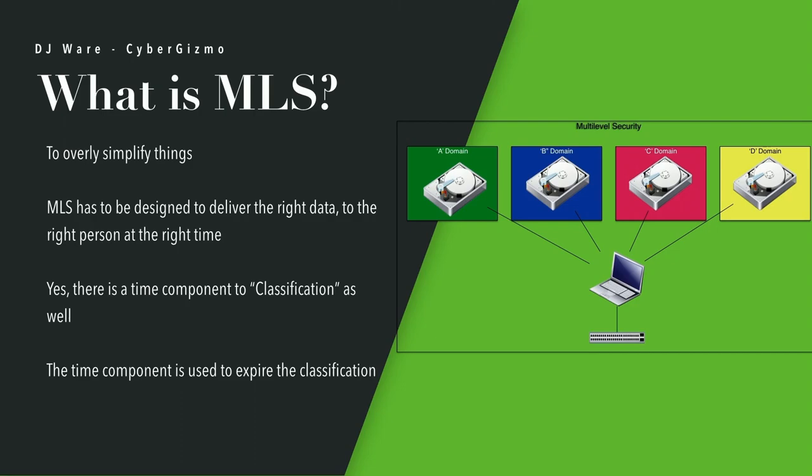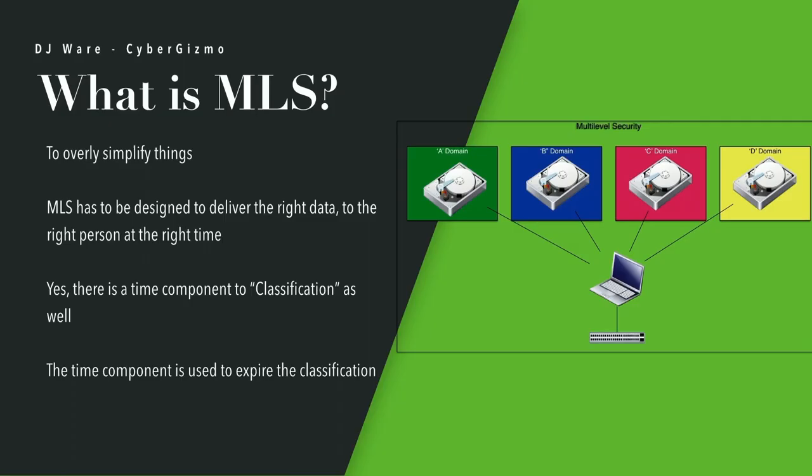Time is another factor in MLS — there is a time component. In classification systems, there is a lifespan. If I classify something at the C domain level, I would have to specify a date as to when that expires. What happens when it expires is dependent on the rules of your particular organization. That data may be expired to be destroyed, or it may be expired to be released into the public domain.